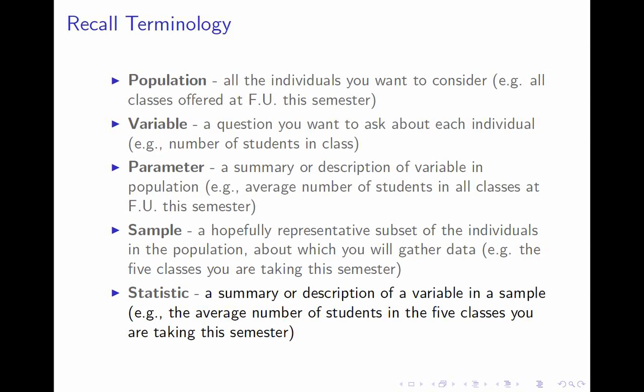If someone — a prospective student — asked you what's a typical class size at Fairfield, you might briefly think about the classes you're in and answer with the average of your five classes, hoping that sample statistic was a good approximation of the population parameter they were interested in. That is a baby version of the inference we'll be doing later in the semester in a more quantitatively sound way.